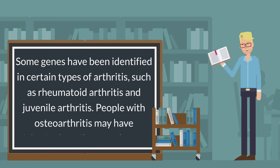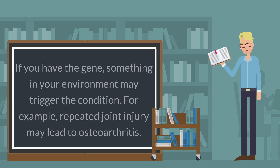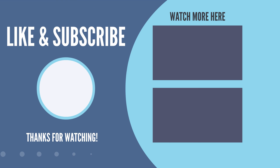Some genes have been identified in certain types of arthritis, such as rheumatoid arthritis and juvenile arthritis. People with osteoarthritis may have inherited cartilage weakness. If you have the gene, something in your environment may trigger the condition. For example, repeated joint injury may lead to osteoarthritis.